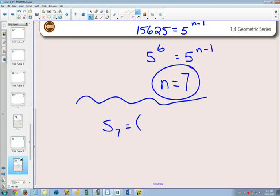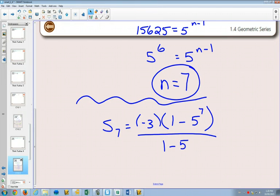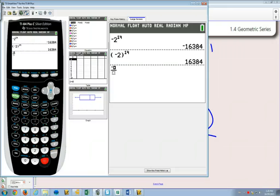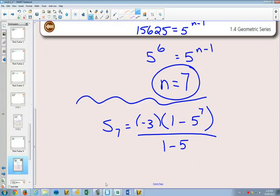We knew term 1 was negative 5. 1 minus, no, term 1 was negative 3, right? Term 1 was negative 3. 1 minus 5 to the 7 over 1 minus 5. Again, this is a nice place where if you have that fraction button on your calculator, write it as a fraction. On the top, you have negative 3 bracket 1 minus 5 to the power of 7 divided by 1 minus 5. Push enter. Negative 58,593. So the sum of that sequence, negative 58,593.